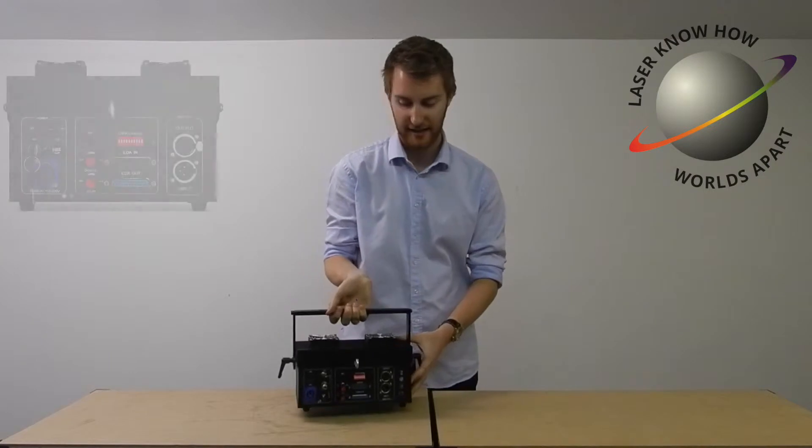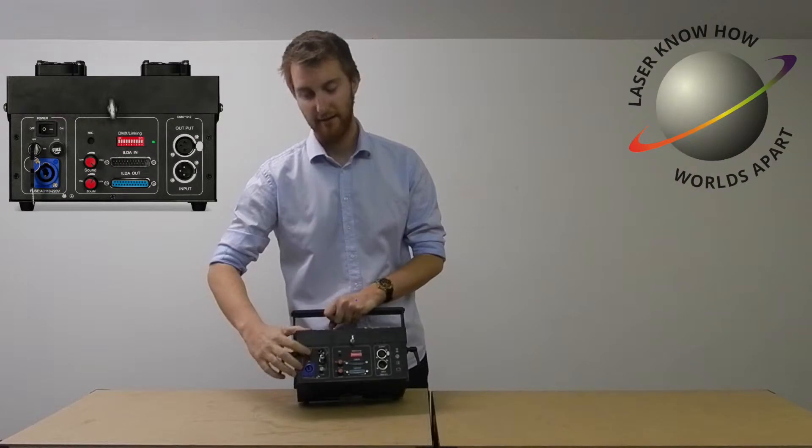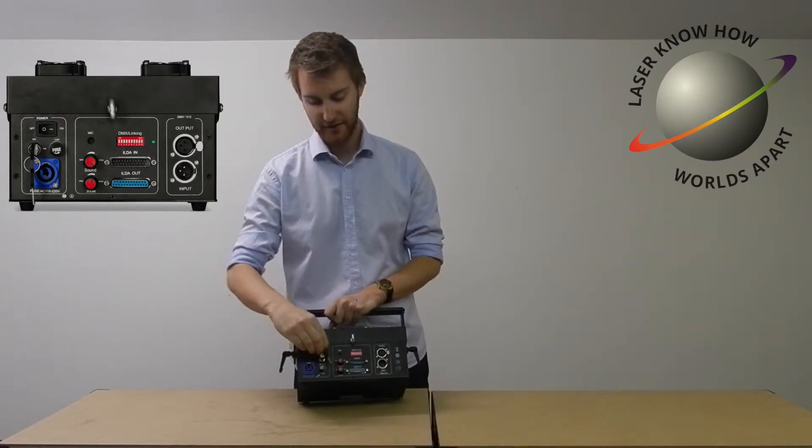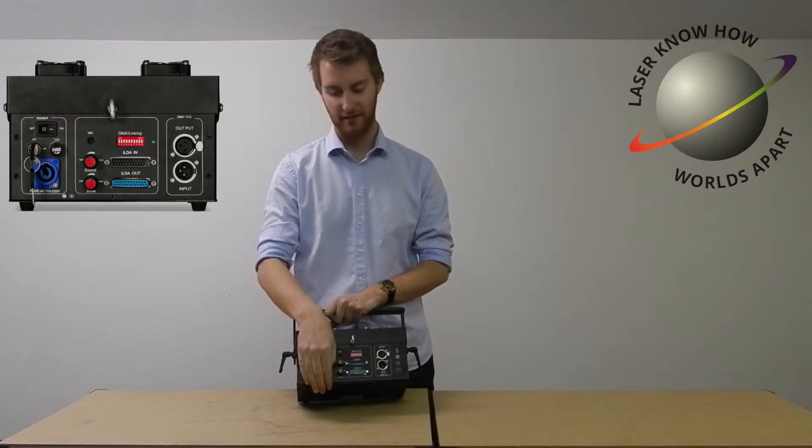If we spin it around to take a look at the back, on the left hand side over here you've got the power con connector as well as the on off switch. You've also got safety key and interlock, so all your power and safety tucked over there to one side.